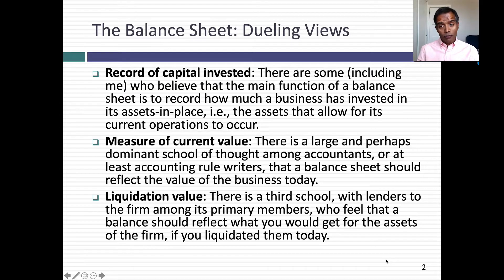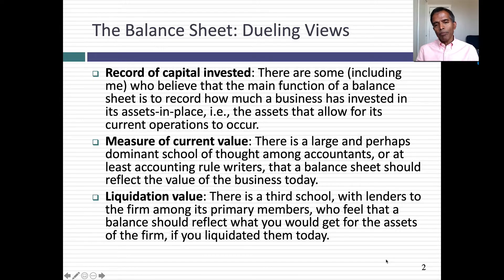So if you look at those dueling views — capital invested, current value, or liquidation value — you can already see why balance sheets can pull in different directions.